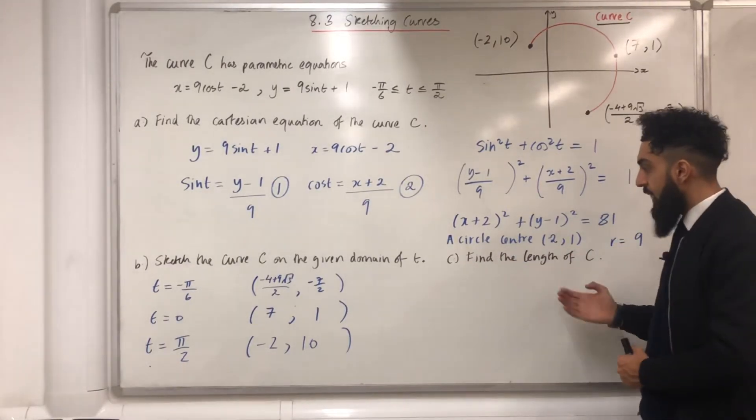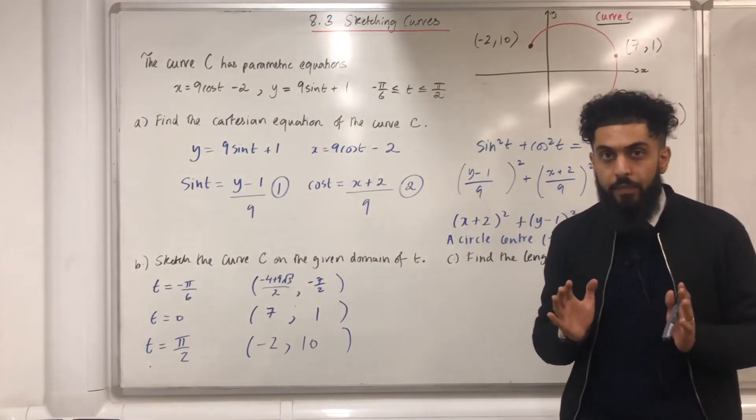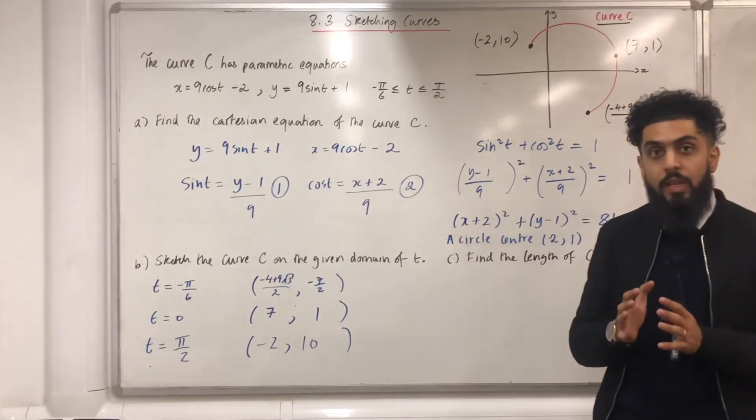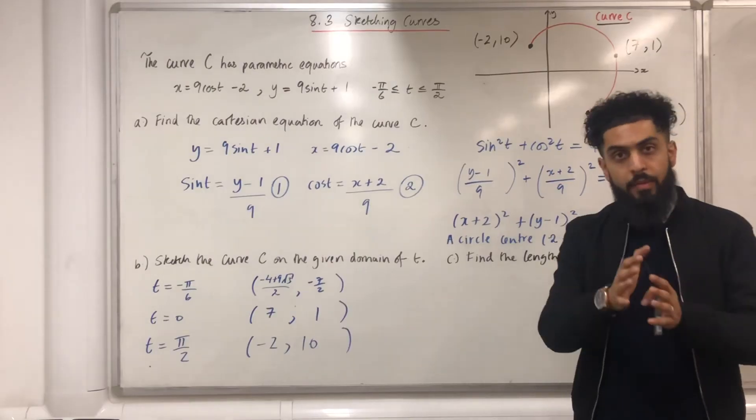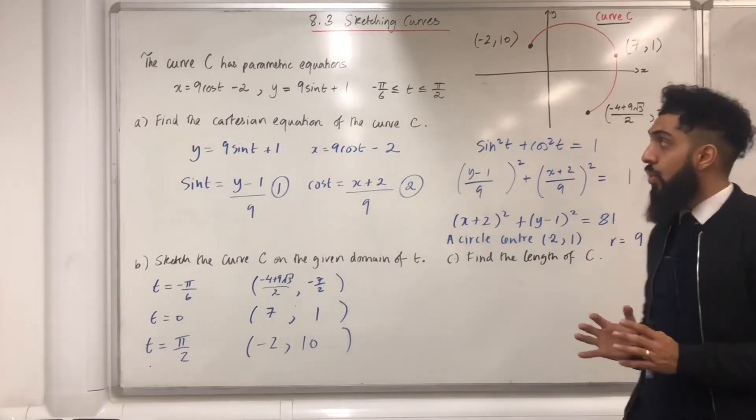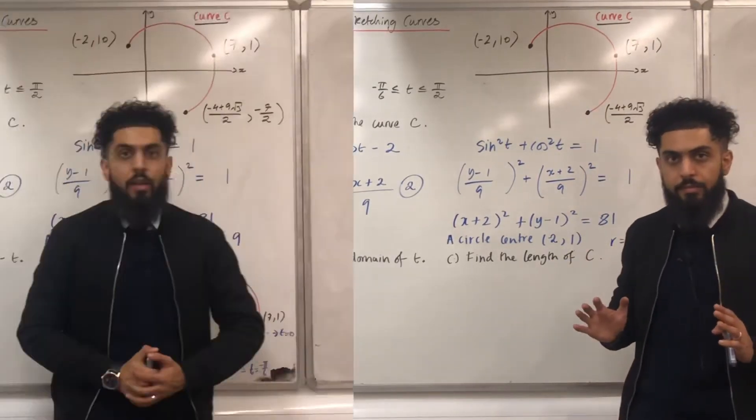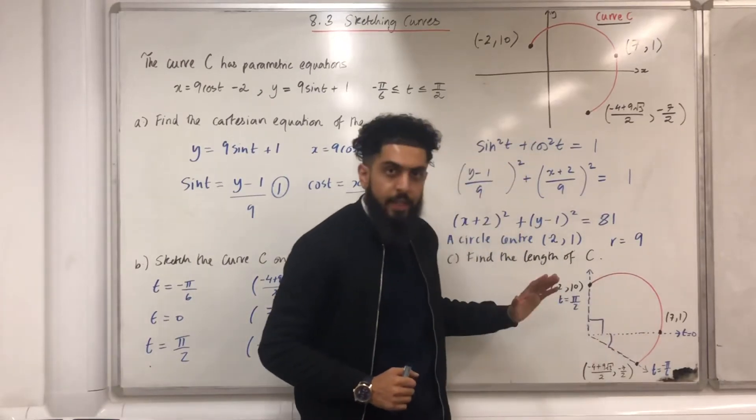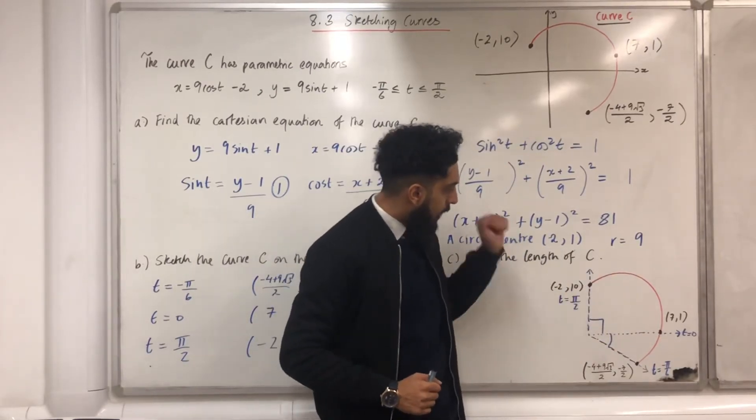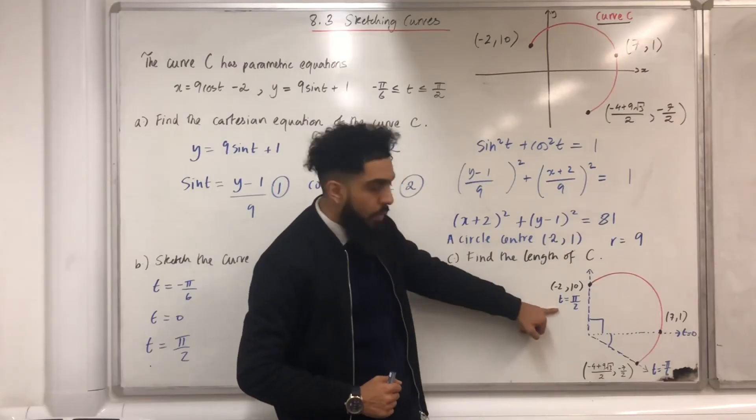Let's have a look at part C. It says find the length of C. Now if I'm finding the length of C, I'm just calculating an arc length. Before I find the arc length, I'm going to draw the curve C again. So here is my beautiful curve C. At this point over here, minus 2, 10, t is equal to pi over 2.